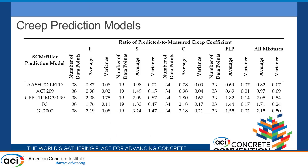Looking at the data divided by supplementary cementitious material — Class F fly ash, slag, Class C fly ash, and Class F plus limestone powder — you can see that the mixture with limestone powder had the highest creep, with the lowest predicted-to-measured ratio compared to the others. The models giving results closest to 1.0 — meaning better prediction — were AASHTO and ACI, which also showed the lowest scatter, providing the best results among all the models for creep.